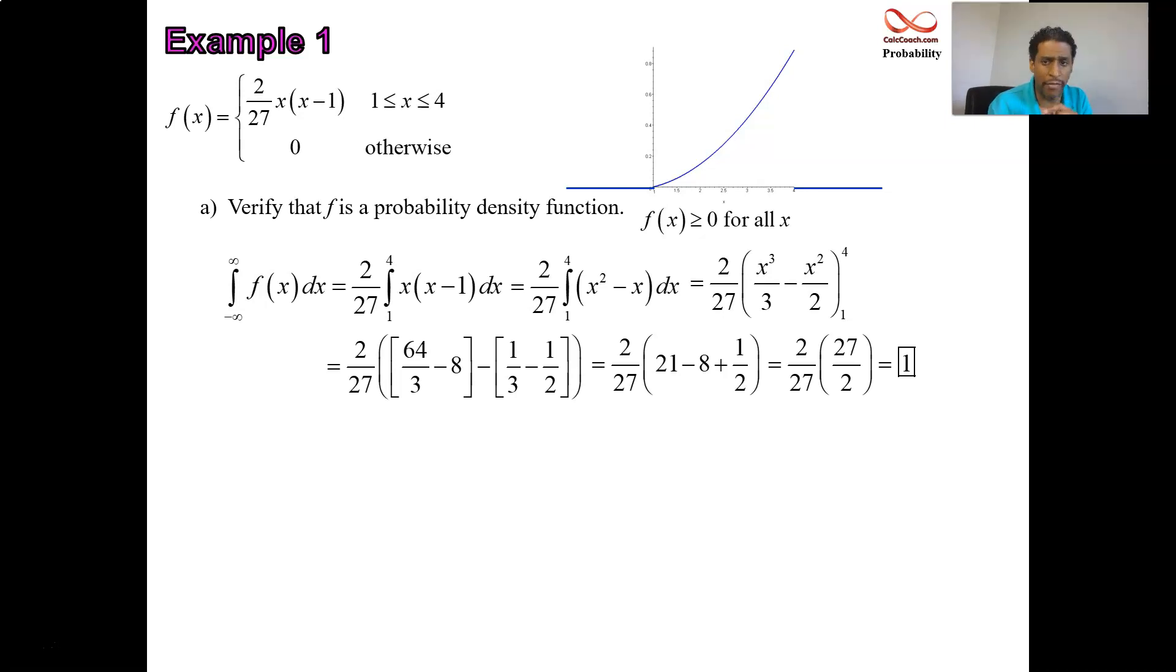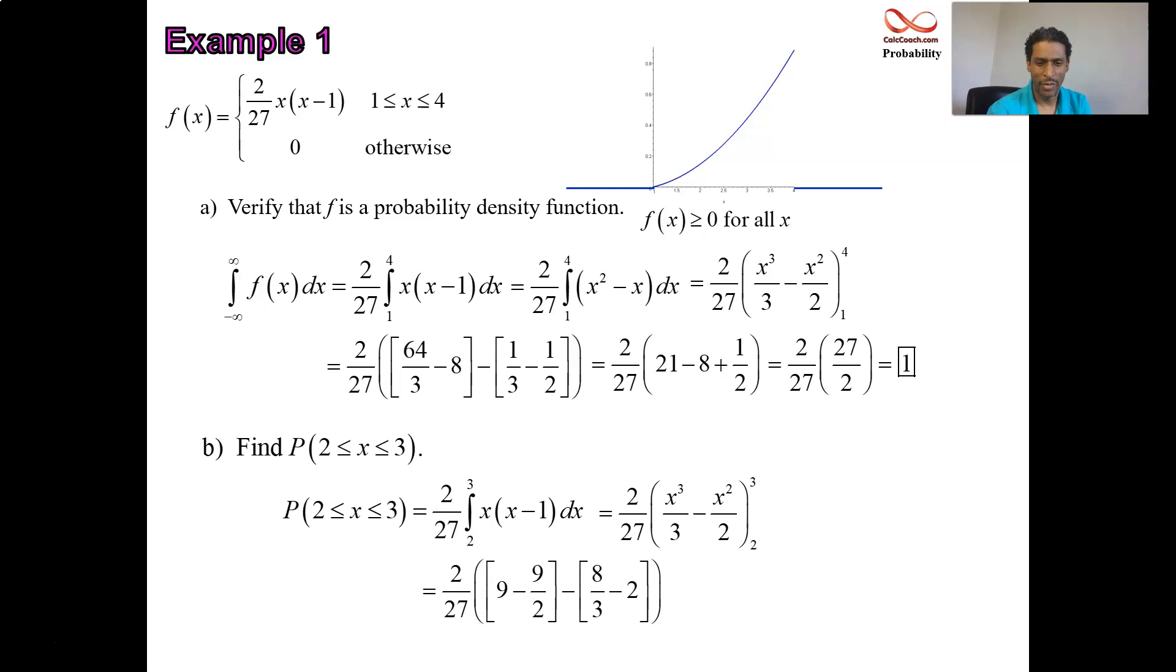And we can do the things that we do in this class with this function. We can calculate probability, calculate the mean, calculate the median. Right now, though, in the time that we have left, let's just calculate probability. What's the likelihood that x takes on values between 2 and 3? That's what that symbol P, parentheses, and then x is between 2 and 3 means. Probability corresponds to area. The chance that you take on values between 2 and 3 is the integral from 2 to 3. We've already integrated it. Now, instead of plugging a 4 and a 1, then we plug a 3 and a 2 in. Work out the details with the fractions. A little nasty there, but 23 over 81 is the final answer.